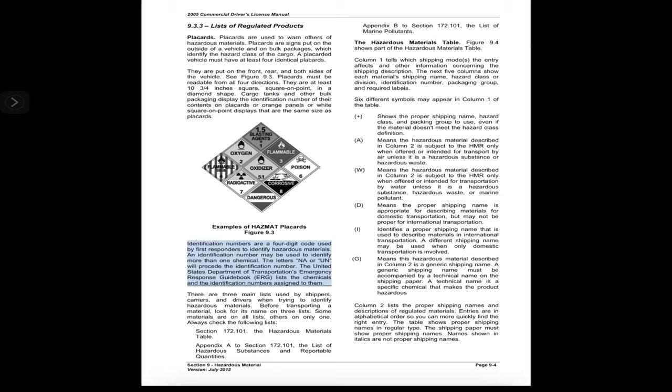Identification numbers are a four-digit code used by first responders to identify hazardous materials. An identification number may be used to identify more than one chemical. The letters NA or UN will precede the identification number. The U.S. Department of Transportation's Emergency Response Guidebook (ERG) lists the chemicals and identification numbers assigned to them. There are three main lists used by shippers, carriers, and drivers when trying to identify hazardous materials.